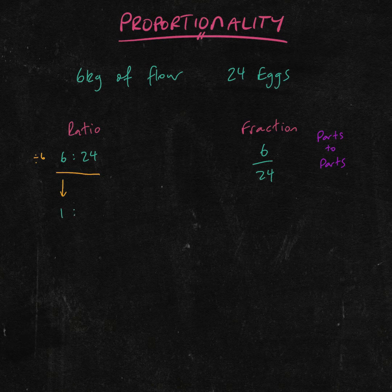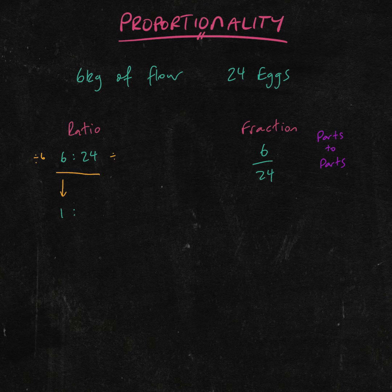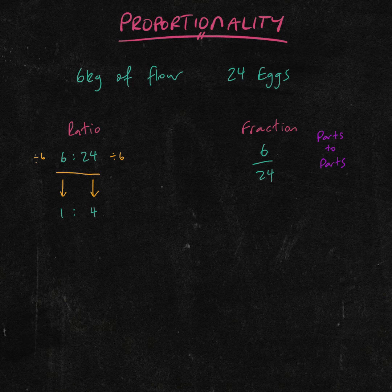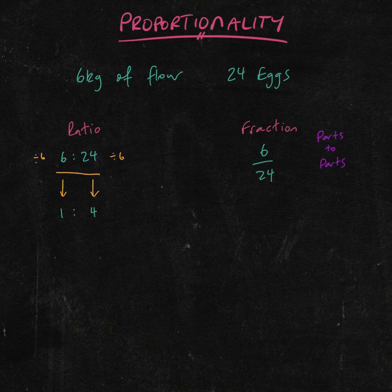Remember, we want to get as close to 1 as we can, hence why I chose 6. Can 24 be divided by 6? Yes, and that is 4. So 6 to 24 can be simplified to 1 to 4.